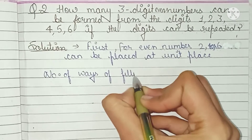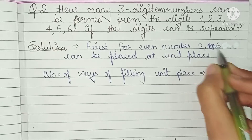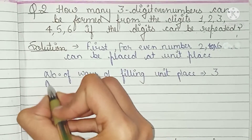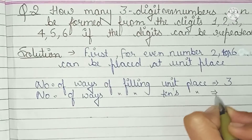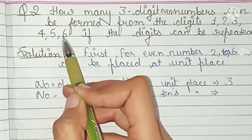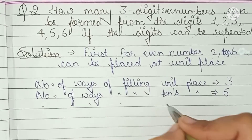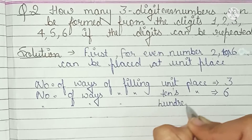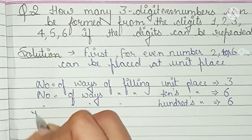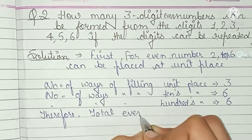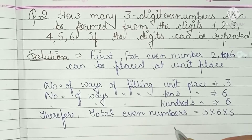Number of ways of filling the unit place is 3, because only 3 even numbers — 2, 4, 6 — can be placed at the unit place. Number of ways of filling the tens place is 6, because whether an even or odd number comes at the tens place doesn't matter. And number of ways of filling the hundreds place is also 6. Therefore total even numbers = 3 × 6 × 6 = 108.